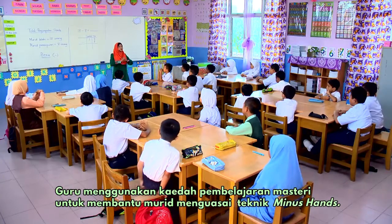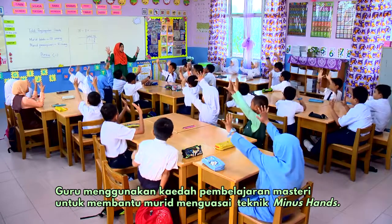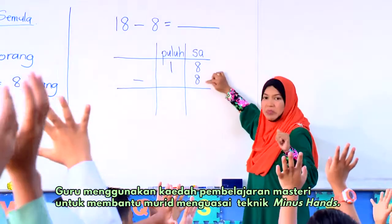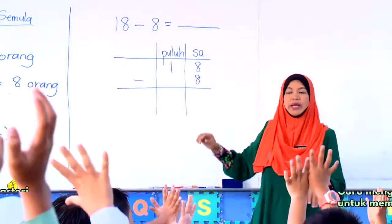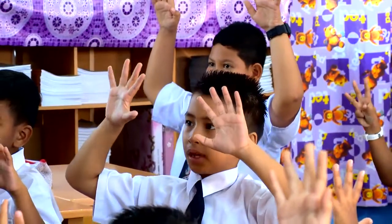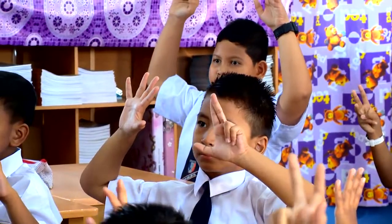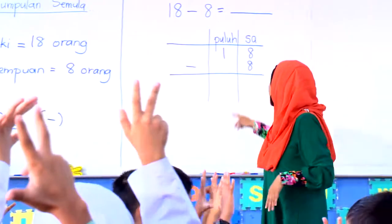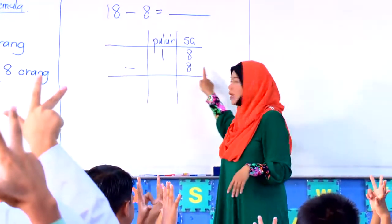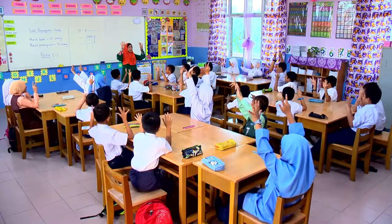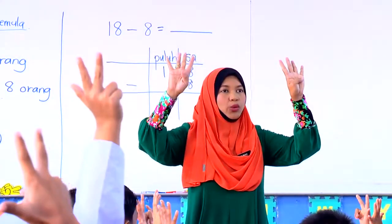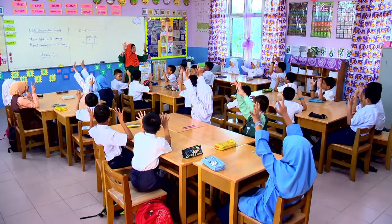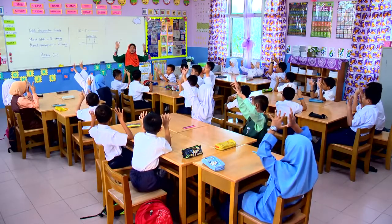Boleh tunjuk saya 10 jari awak. Sekarang, kita nak tengok nilai ini sama. Bila sama, awak kena keluarkan berapa dekat sini? 8. Tunjuk jari pada saya sebanyak 8. Sekarang 8 kita nak tolak dengan berapa? 8. 8 nak tolak 8 — maka jari kita akan tutup atau akan buka? Tutup. So kita ada 8 nak tolak dengan 8, kita kira sama-sama.